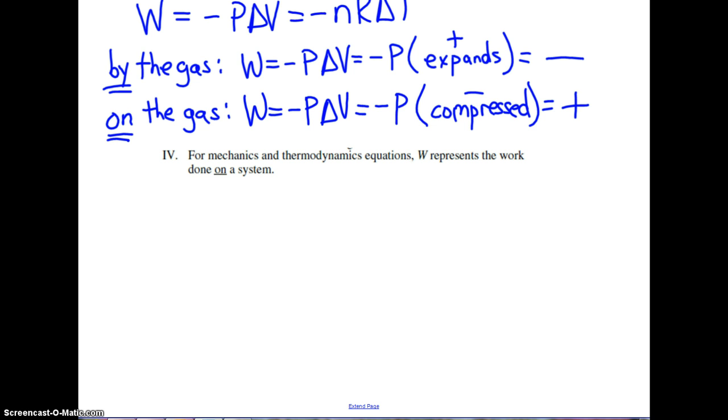Let's talk about Q. Q is zero if the process is adiabatic. But Q is positive if heat is added to the system, and Q is negative if heat is lost by the system. This concept is pretty intuitive and pretty easy to grasp.